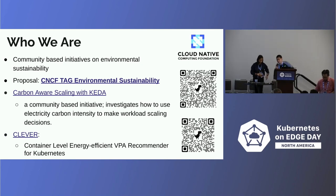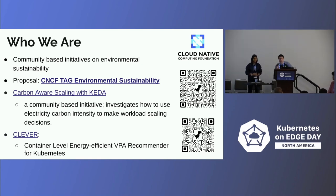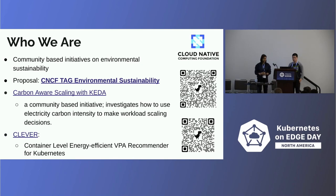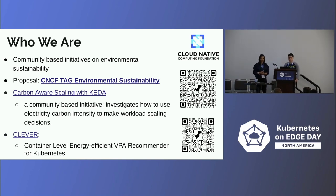I am Kai Liu, a University of Toronto student currently working as an intern at Red Hat as a software engineer in the sustainability team. We took a community-based initiative on environmental sustainability — we already have a CNCF environmental sustainability tag. We collaborated with Microsoft on carbon-aware scaling with Kera, investigating how to use carbon intensity to make workload scaling decisions. We also collaborated with IBM on making a VPA recommender for Kubernetes that takes into account container-level energy.